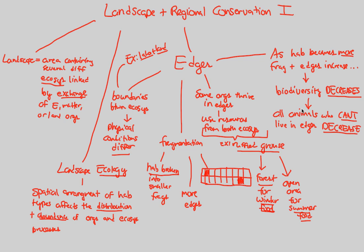Animals unable to live in edges decrease in effective population size. Only those that are edge-adapted, like the ruffled grouse, will thrive — as we'd expect from natural selection. But if we lose so much biodiversity and so many of these animals, we know from our ecological studies that this is not good for the entire ecological landscape. And thus, we've established the idea of edges, landscape, and landscape ecology, and we'll continue this discussion in the next video.